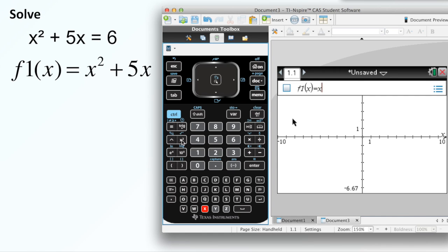X squared. Your squared button is right here. X squared plus 5X. Then I'm just going to hit Enter. This is my one graph.